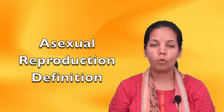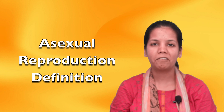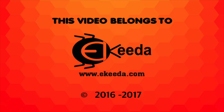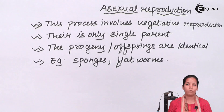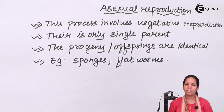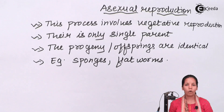Asexual reproduction is the one in which only one parent is involved, unlike sexual reproduction where two parents are involved. Classic examples of asexual reproduction could be regeneration in planaria or budding formation in hydra.